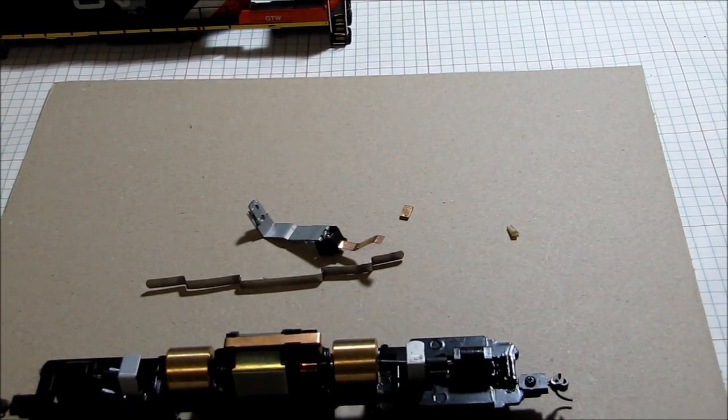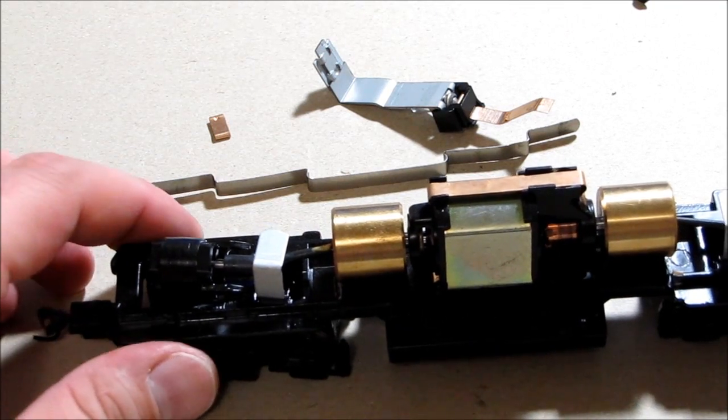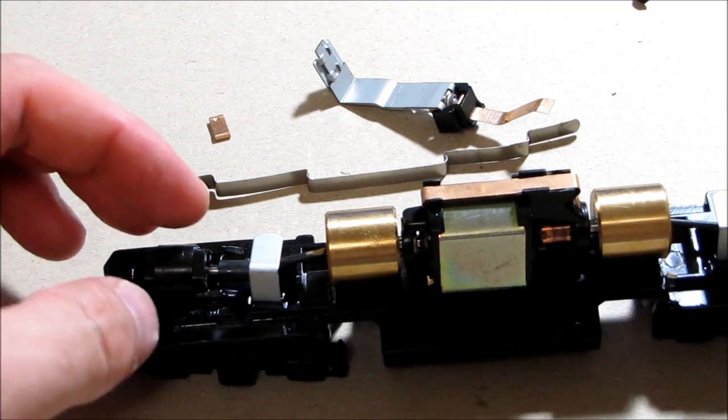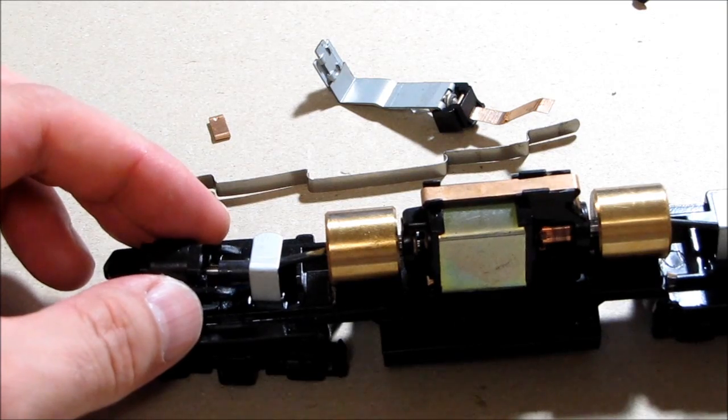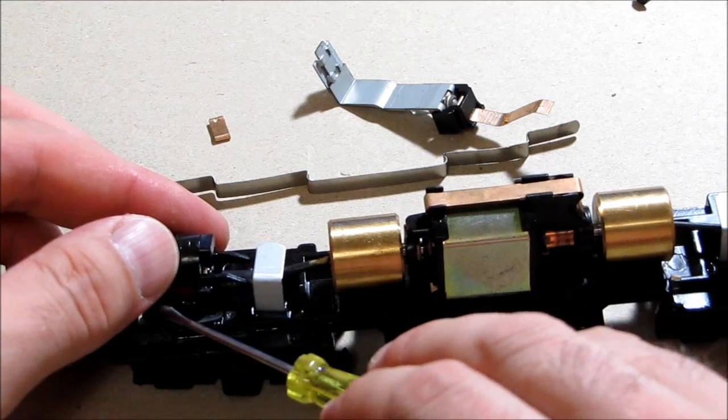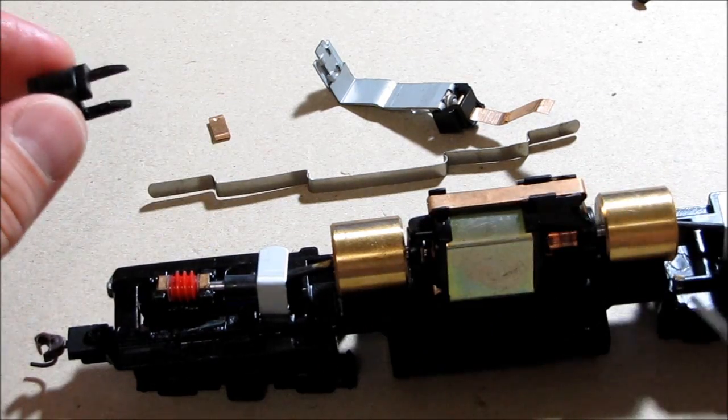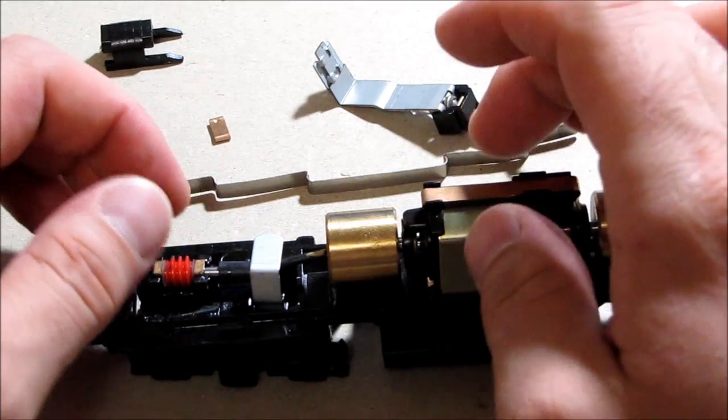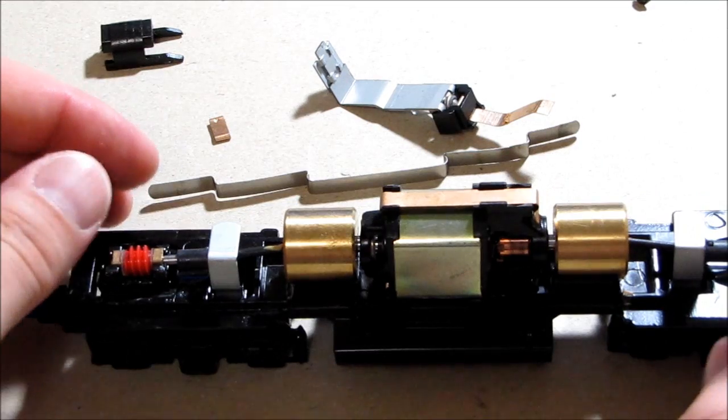Once you get those four screws out, something that I came across with this guy here that's a little different is we have to remove the worm gear housing. Very carefully you can just pry up the one edge right along here, and once you pry that off it'll just pop off just like that. Make sure you put that to the side. The reason being is because once I had the screws out, I couldn't get the actual motor part out of there.